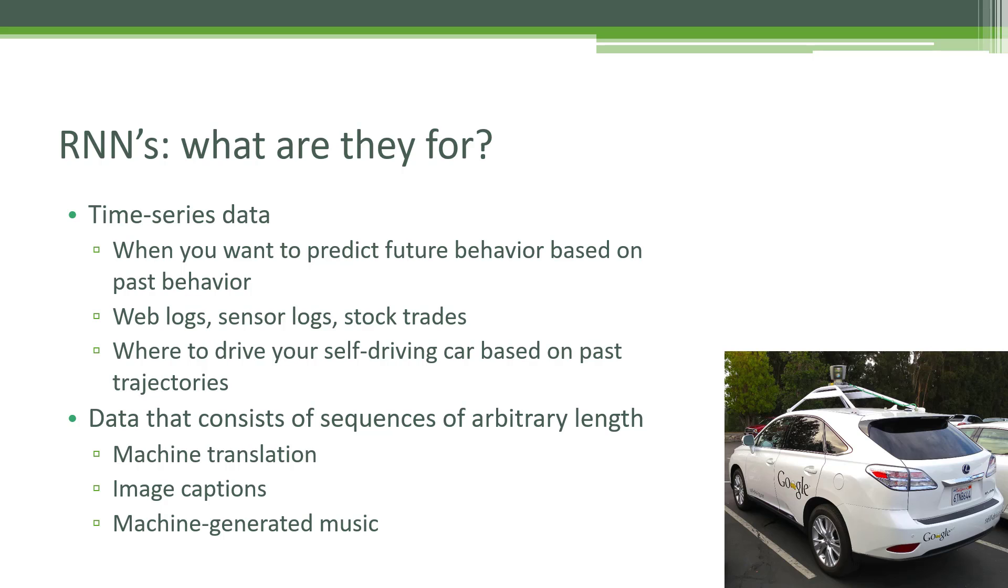Another example might be if you're trying to develop a self-driving car. You might have a history of where your car has been, its past trajectories, and maybe that can inform how your car might want to turn in the future. So you might take into account the fact that your car has been turning along a curve to predict that perhaps it should continue to drive along a curve until the road straightens out.